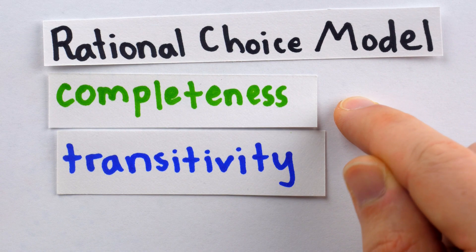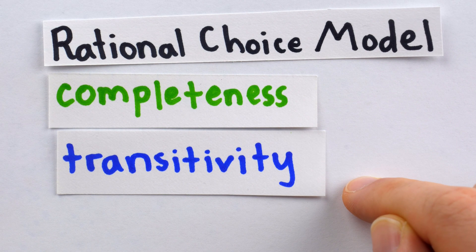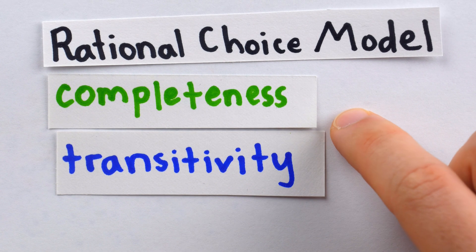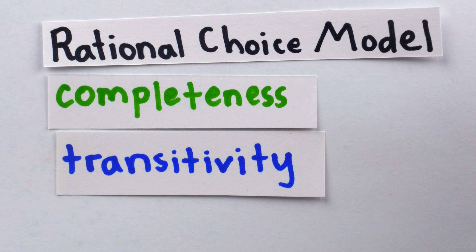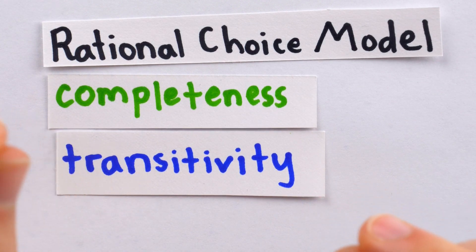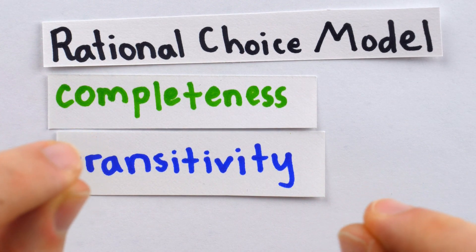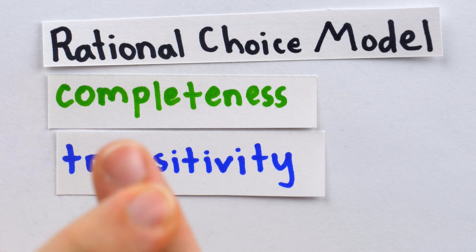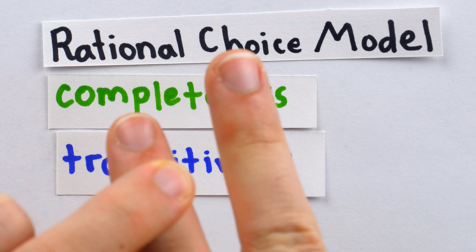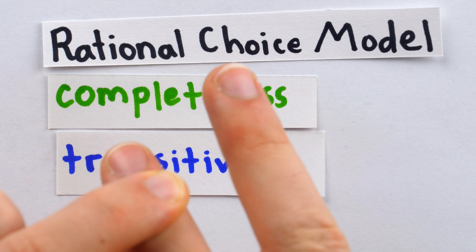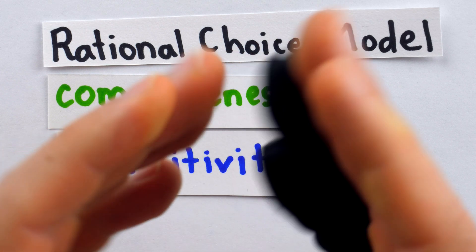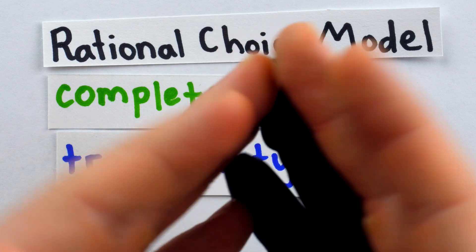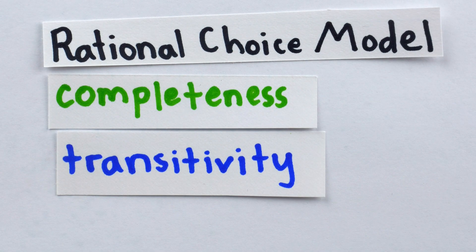The first is completeness, and the second is transitivity. Completeness means that on a set of choices, a rational actor should have for every pair of choices a preference of one over the other, or they should be indifferent between the two, and so view them as equivalent in a sense.